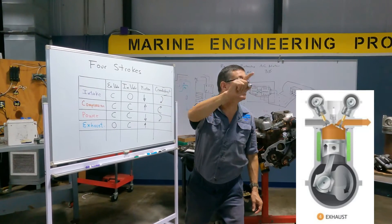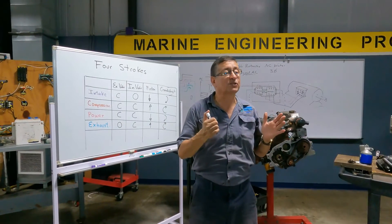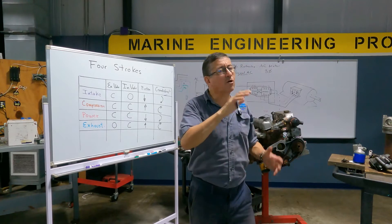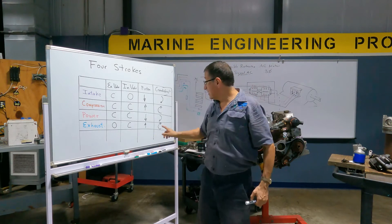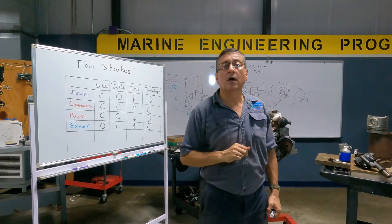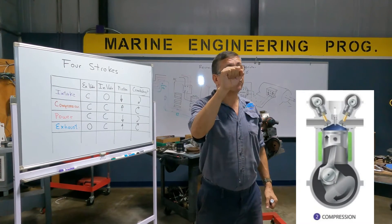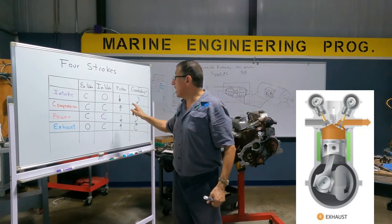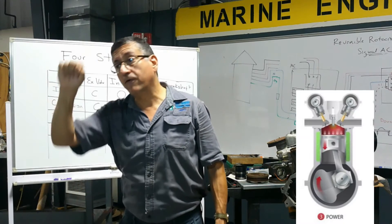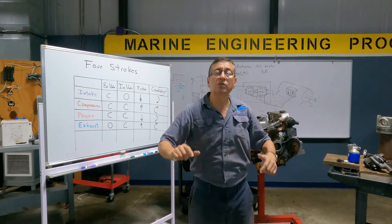In the exhaust stroke, the crankshaft rotates another 180 degrees. Those are the four strokes: intake, compression, power, and exhaust. In a complete cycle, the crankshaft makes two full rotations — half for each stroke. The piston is at top dead center twice per cycle: once at the end of compression and once at the end of exhaust. The piston is at bottom dead center twice: once at the end of intake and once at the end of power.